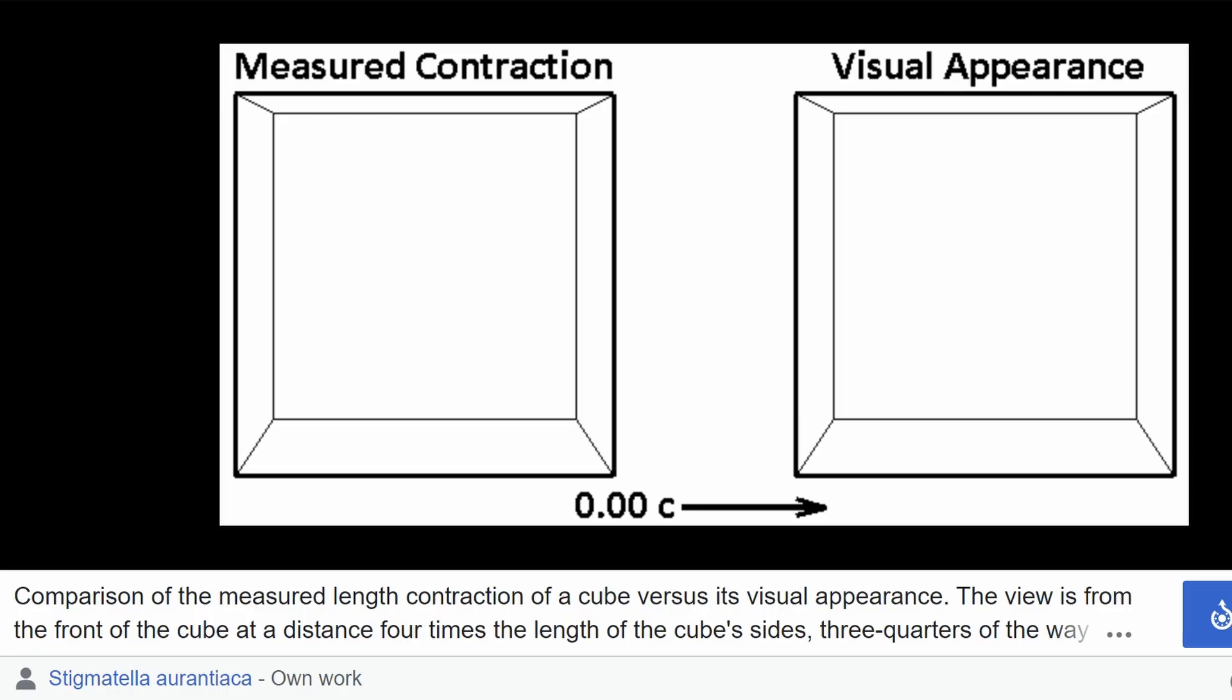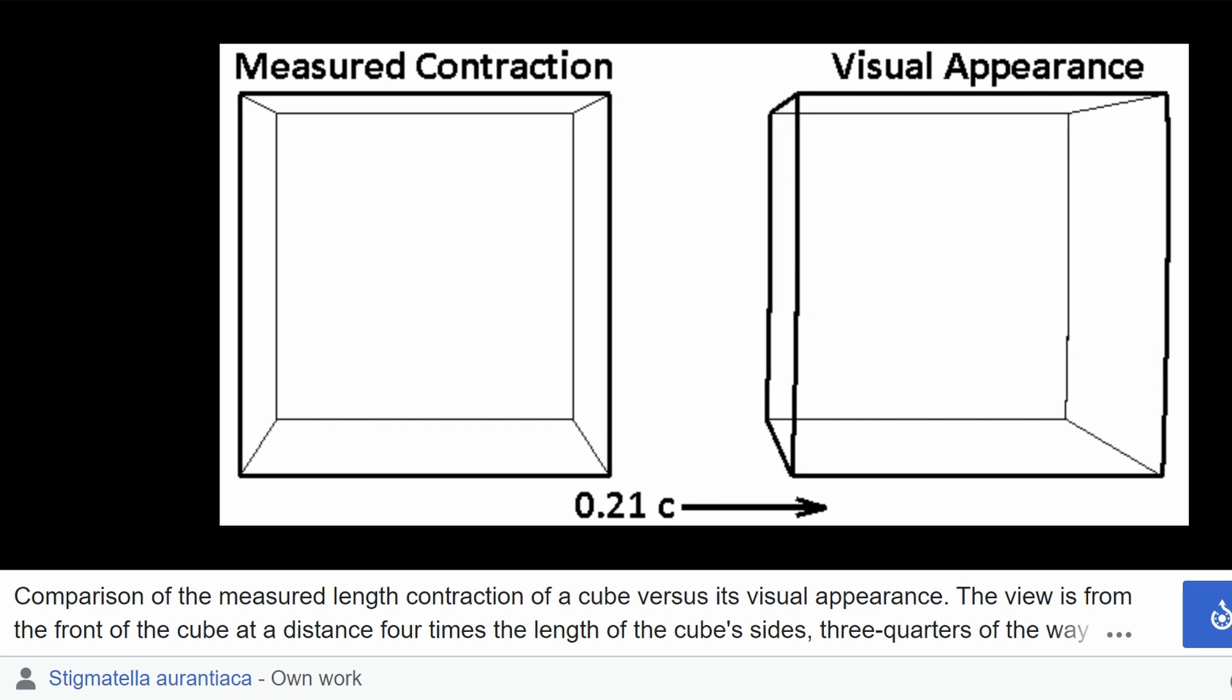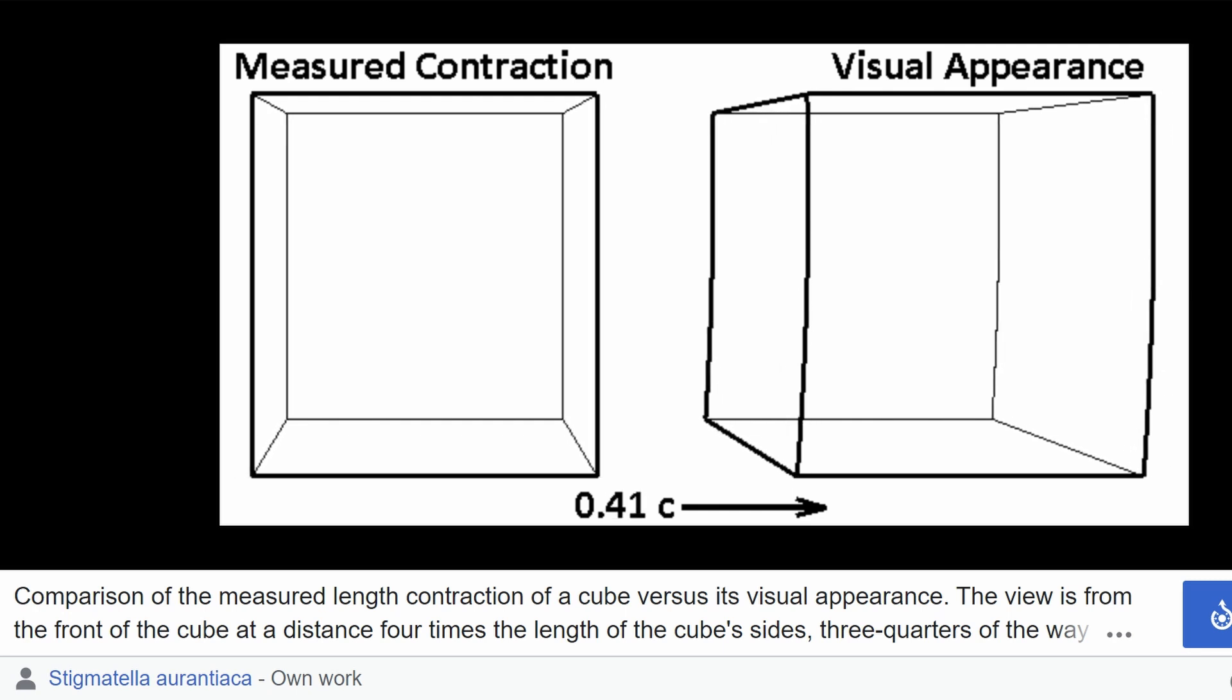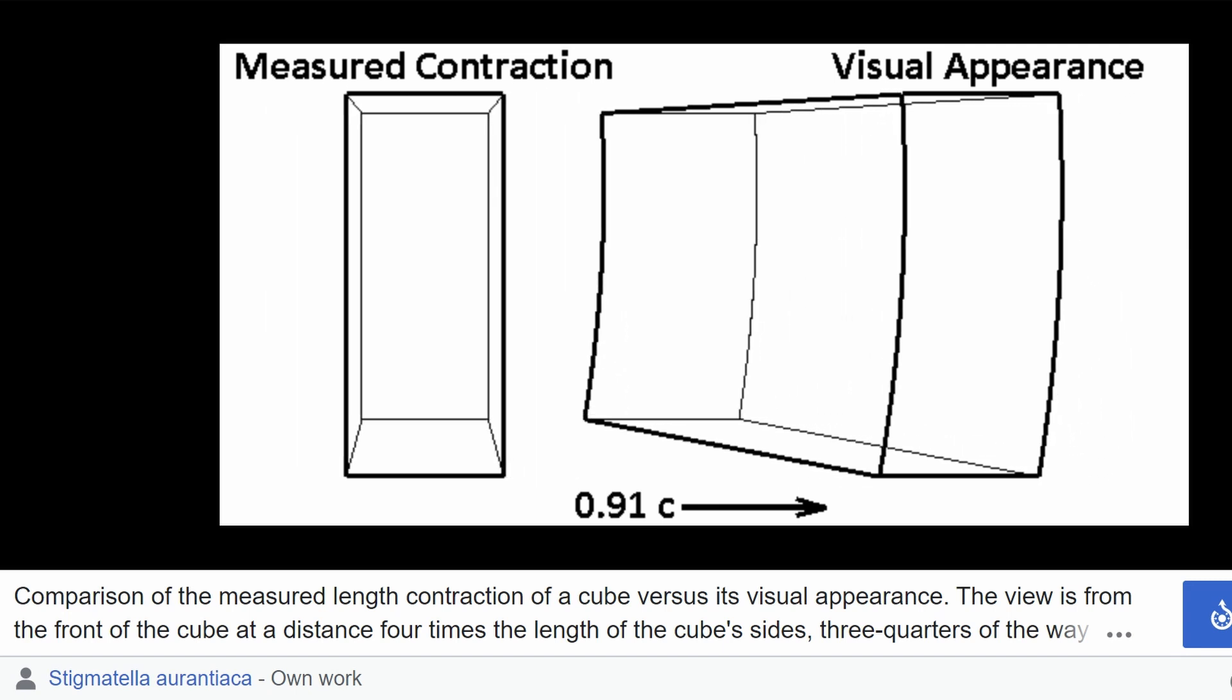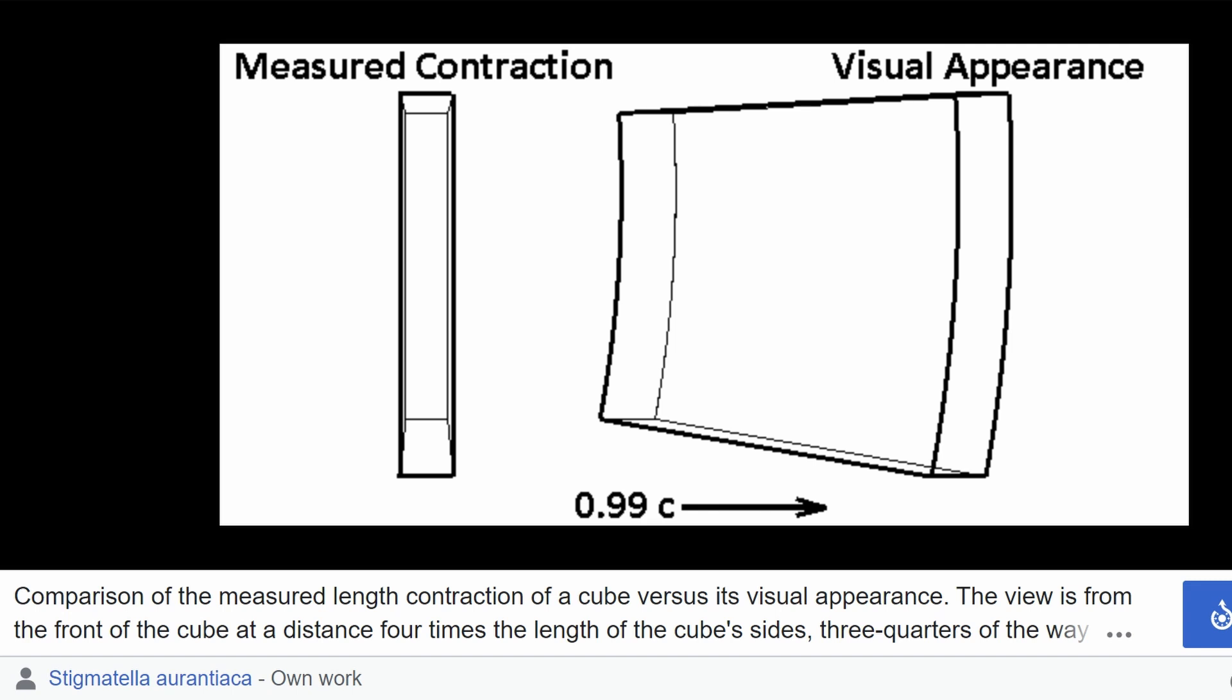In reality, what would you actually see is quite different, as you would experience the so-called Terrell rotation. As you can see here in this nice animation by Stigmatella, while the objects in fact do contract in length, you would see it kinda rotated due to the optical distortion. And it would actually appear lengthened rather than shortened.